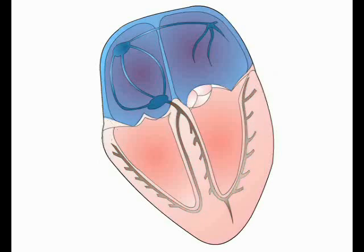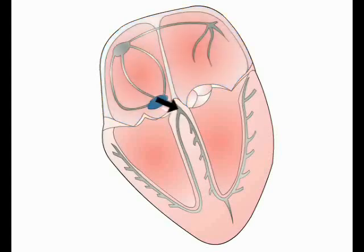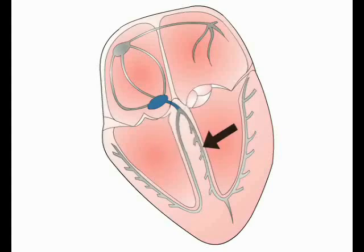In a normal heart, the only route by which the depolarizing wave can enter the ventricular conducting system is through the AV node. In order to allow the ventricles to fill with blood following atrial contraction, the AV node initially delays the spread of the depolarization wave. After this short delay, the depolarizing signal is transmitted into the ventricles via the bundle of His. The bundle of His lies in the interventricular septum and divides into right and left bundle branches.